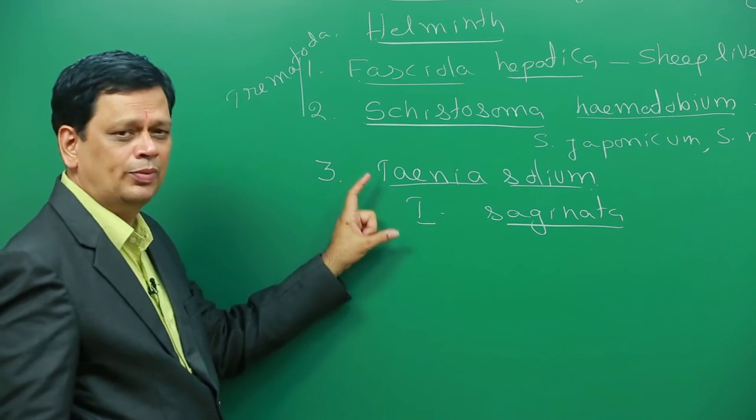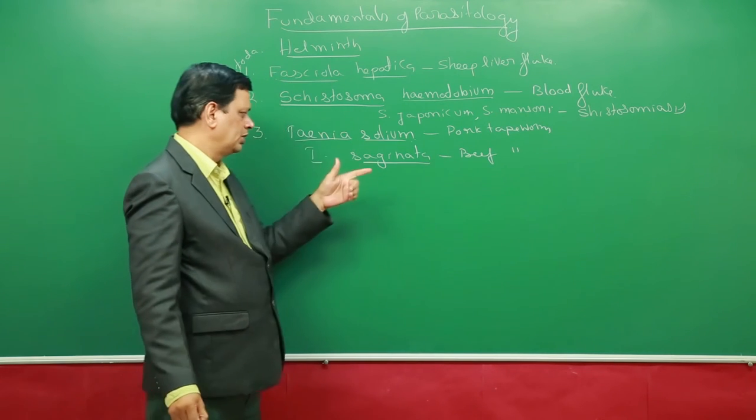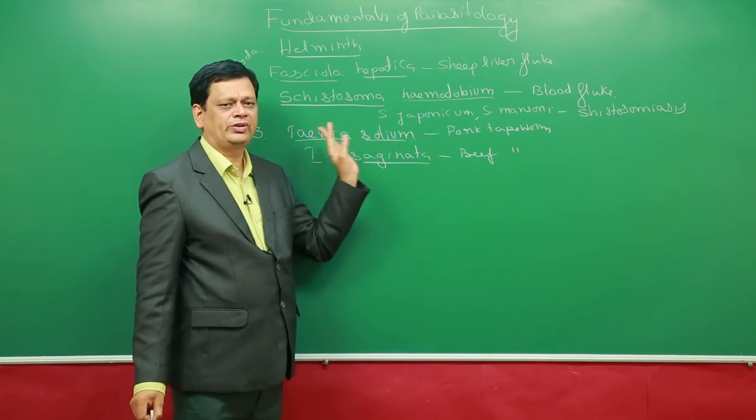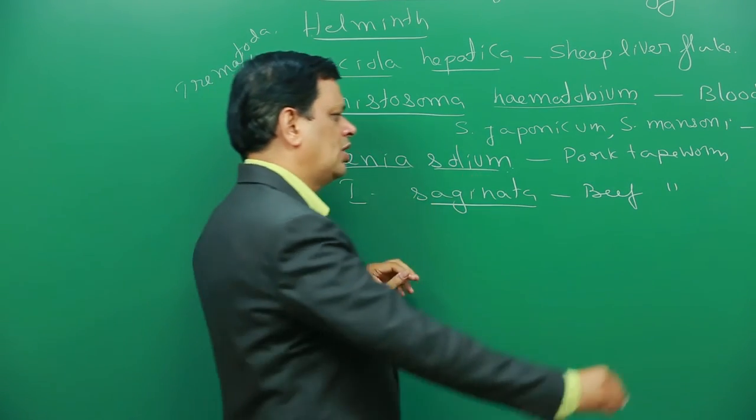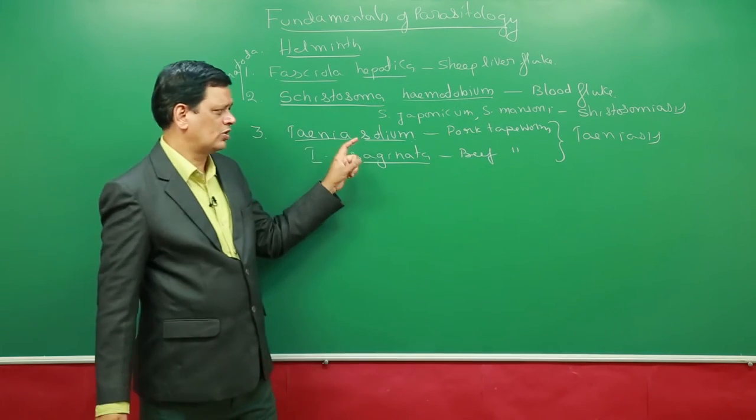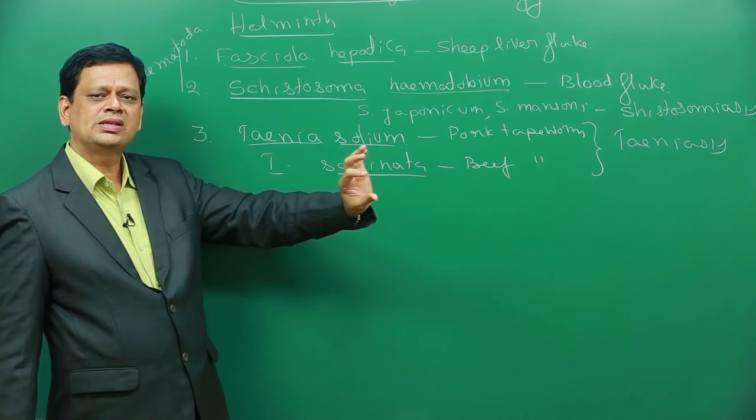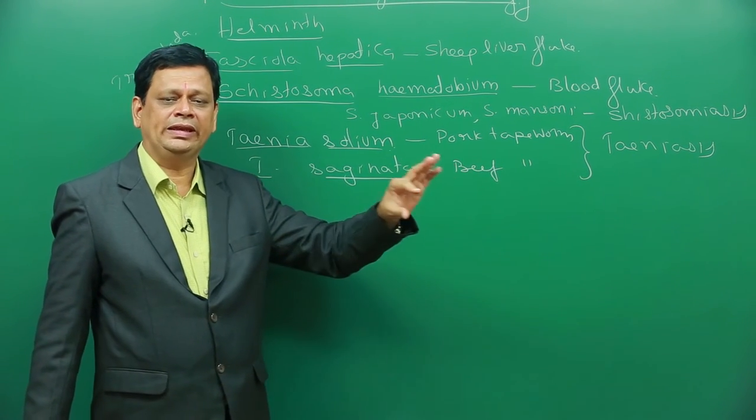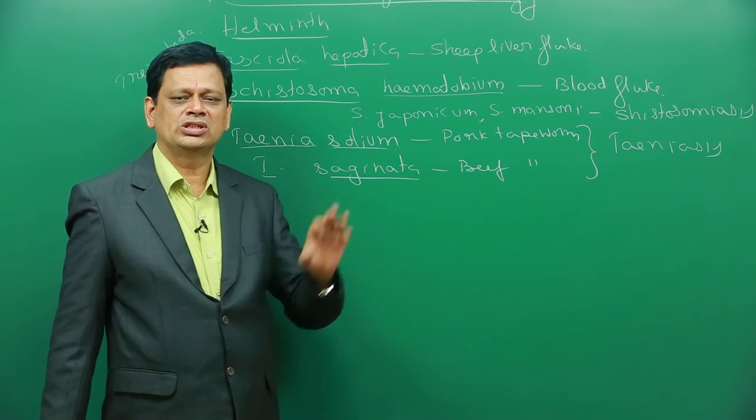So there are two important tapeworms. One is called pork tapeworm. Other one is called beef tapeworm. Both of them, the disease caused, we call it taeniasis. This is caused by adults in human beings. Taeniasis will cause abdominal pain, abdominal discomfort, indigestion, etc.